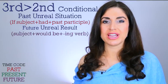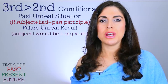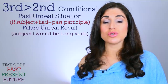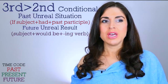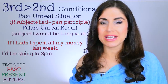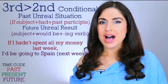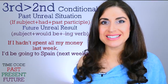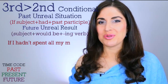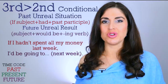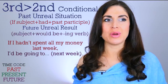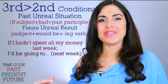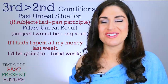You can use would + be + -ing — the present continuous — to talk about future plans, or you can use 'be going to'. For example: 'If I hadn't spent all my money last week, I'd be going to Spain next week.' So where would you be going if you hadn't spent all your money? Comment below and share your mixed conditional.